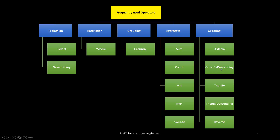When descending order is required, we need to specify descending explicitly. Then, ThenBy is used when we are going to use multiple column ordering. These are used in extension methods, for example when we want to order by descending. These are the steps involved in LINQ operations.